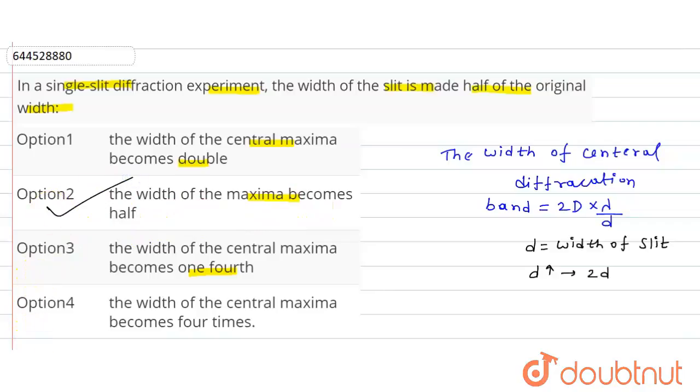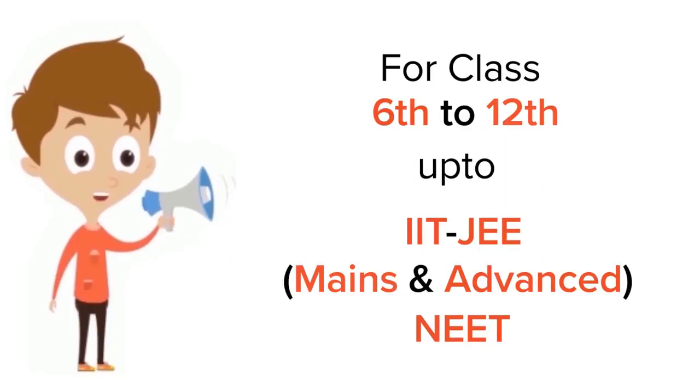So here option second will be the correct option. Thank you. For class 6 to 12, IIT and NEET level, trusted by more than 5 crore students, download Doubtnet app.